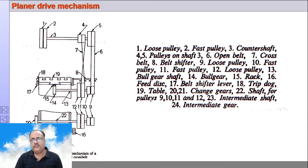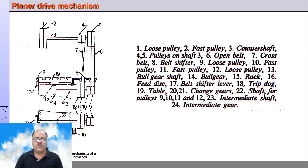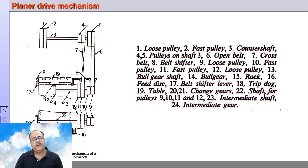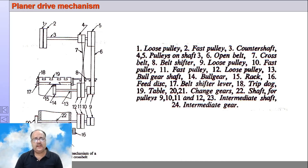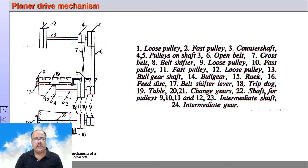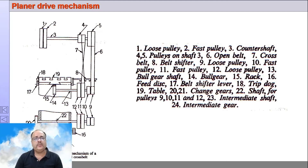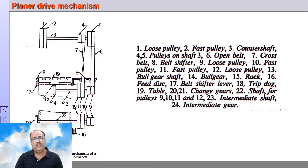Pulley 4 and pulley 5 are different in diameter — pulley 4 is small and pulley 5 is larger; this is by design, intentionally made smaller. Pulley 4 meshes with another pulley 11 which is a fixed pulley on shaft 22. Power is transmitted from pulley 4 to pulley 11 using a cross belt drive. Pulley 5 on shaft 3 is connected to pulley 9, which runs loose on shaft 22.